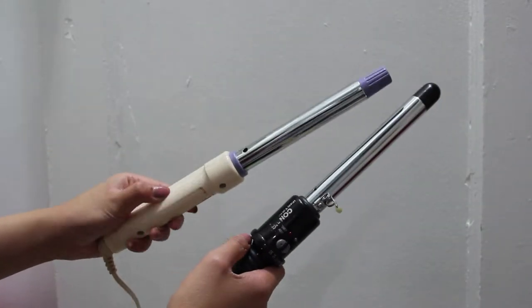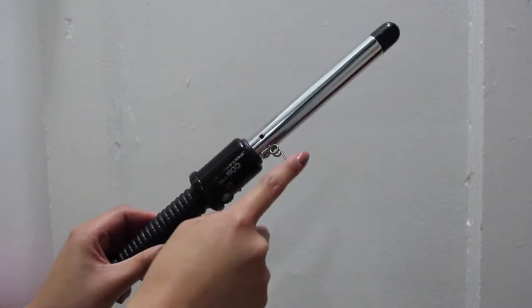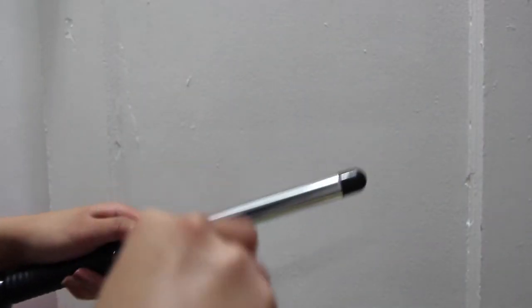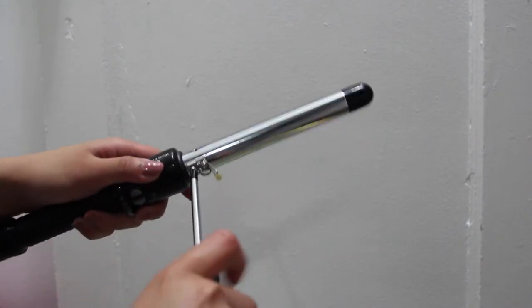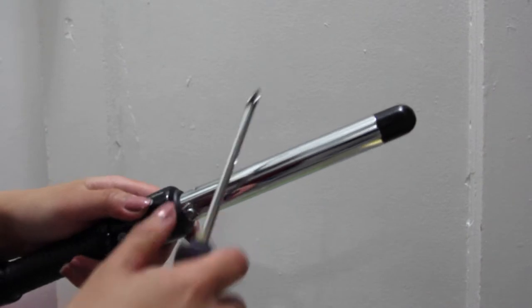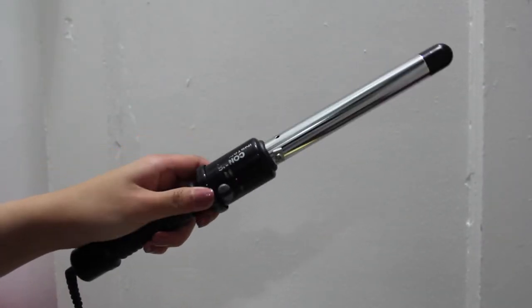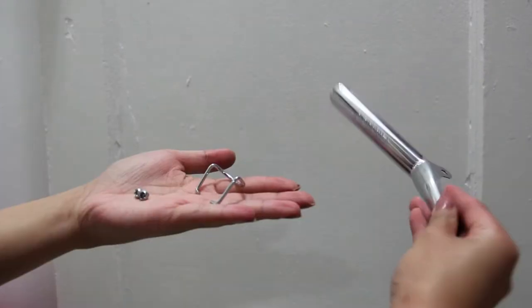After doing that, your curling iron should look something like this and we're going to do one more step, and that is to take this thing out. Don't know what it's called, but we're going to use the screwdriver and unscrew it. After that, it will be good to go and you can use it to create nice beachy waves. It's super cute and you save a ton of money.